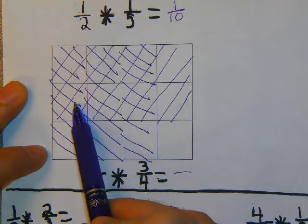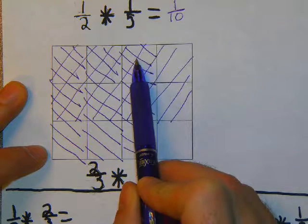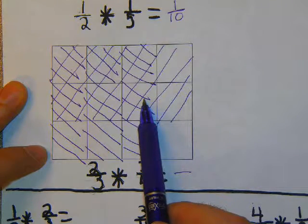So my total for 2 thirds times 3 fourths, I have a total of 1, 2, 3, 4, 5, 6. A total of 6 boxes that are shaded in with both angles of my shade marks.